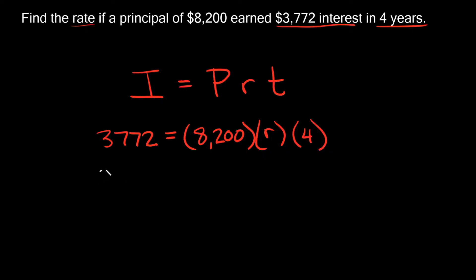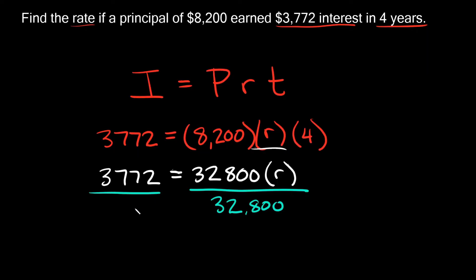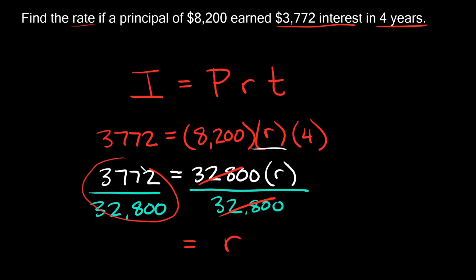Let's simplify. 3,772 equals 8,200 times 4 times R. 8,200 times 4 is 32,800. So 3,772 equals 32,800 times R. To solve for R, divide both sides by 32,800. These cancel out, leaving R equal to 3,772 divided by 32,800. Plugging that into your calculator gives you 0.115.